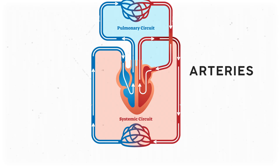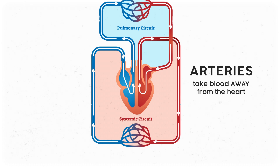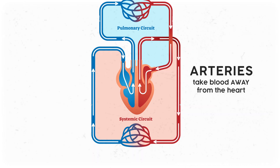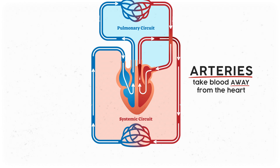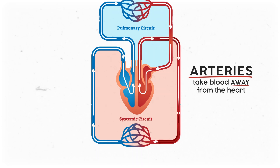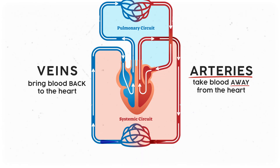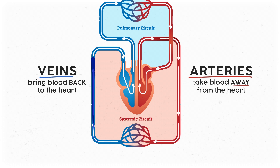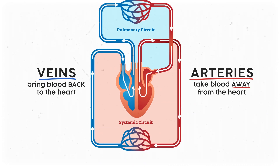Real quick terminology first. Arteries are the blood vessels that take blood away from the heart — you can remember A for artery and away. In systemic circulation, they carry oxygen-rich blood to the rest of the body, while veins carry deoxygenated blood back to the heart.